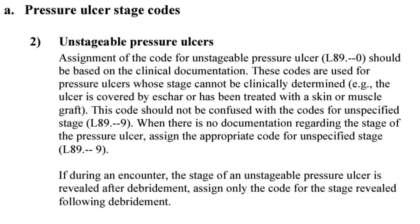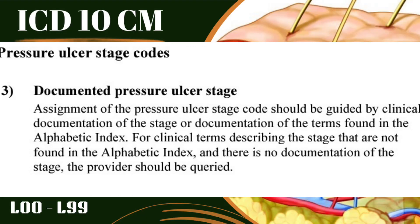Unstageable codes are used when the pressure ulcer stage cannot be clinically determined — for example, when the ulcer is covered by a scar or has been treated with a skin or muscle graft. If during an encounter the stage of an unstageable pressure ulcer is revealed after debridement — removing all the dead tissue — you can then code the stage directly.